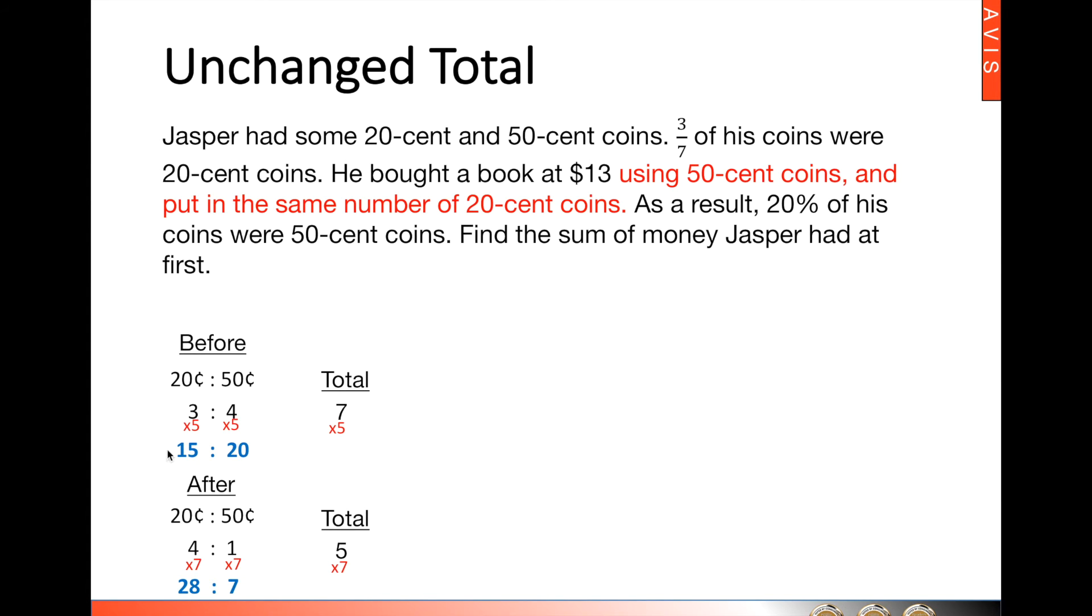As we can see here, 20-cent coins, we started to have 15 units. However, it ended up with 28 units. There was an increase of 13 units. And for 50-cent coins, from 20 to 7, there was a decrease of 13 units.